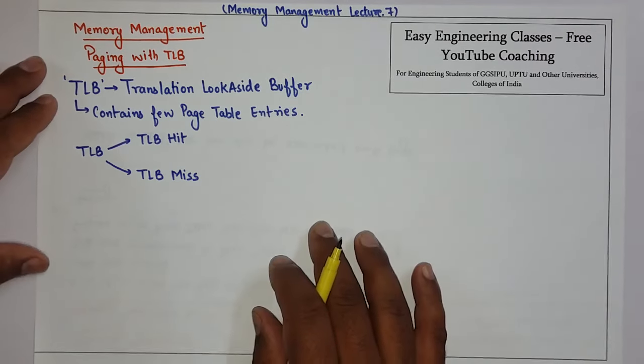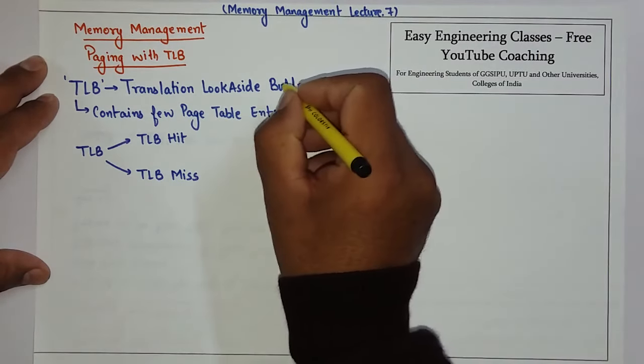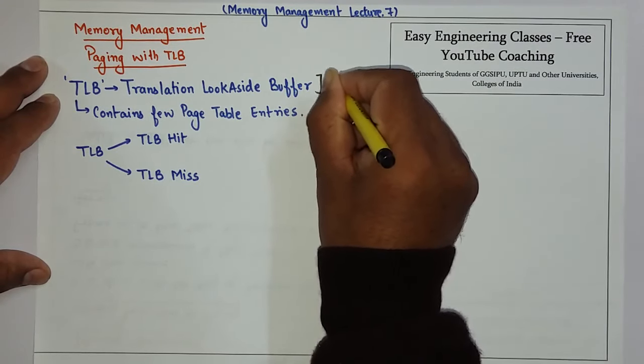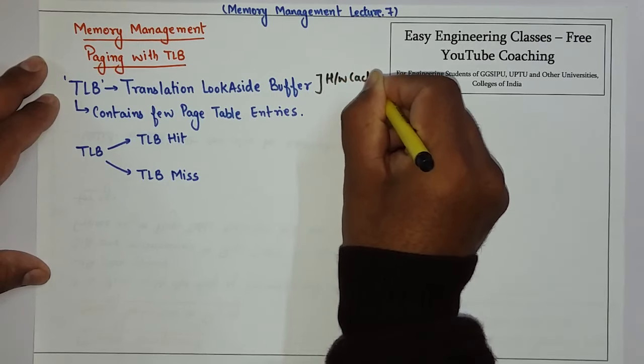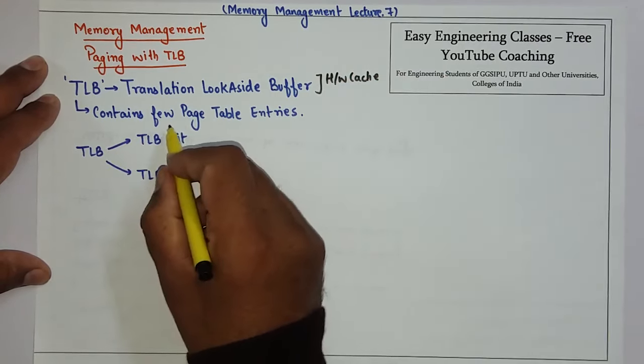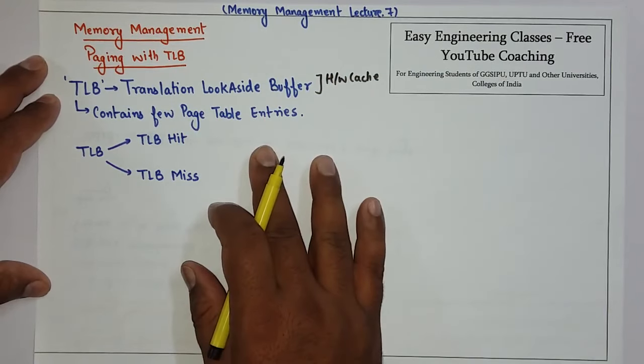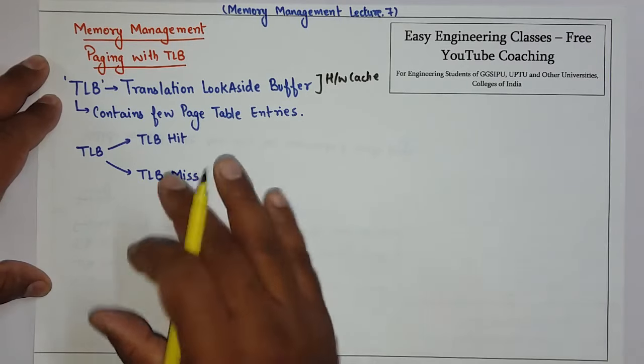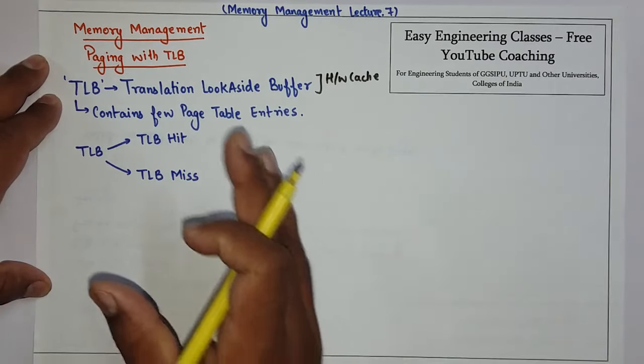So what is TLB and what is it used for? TLB is a hardware cache memory that contains very few page table entries.